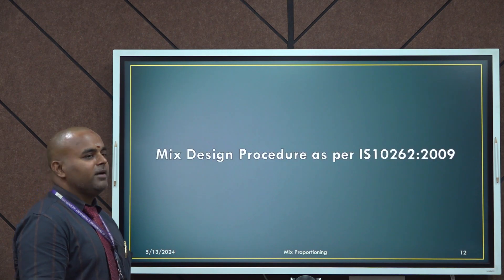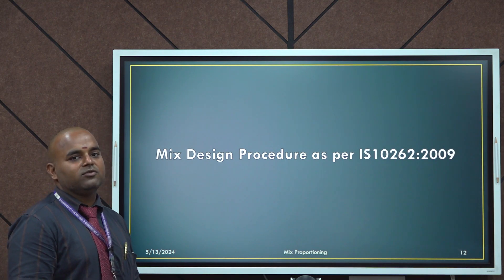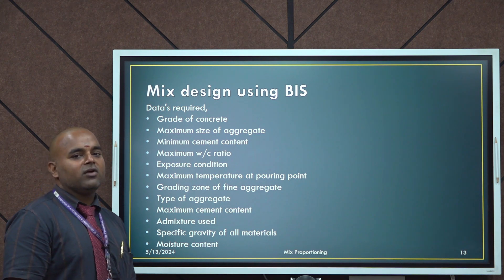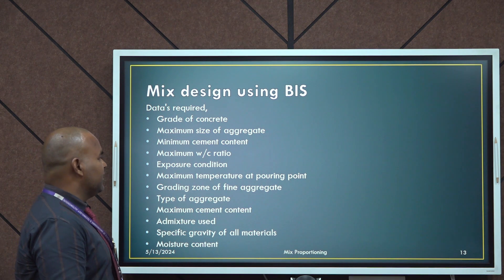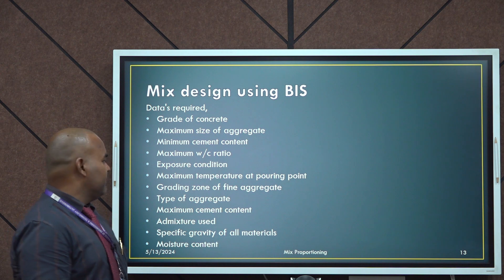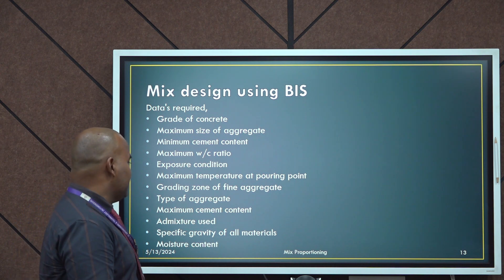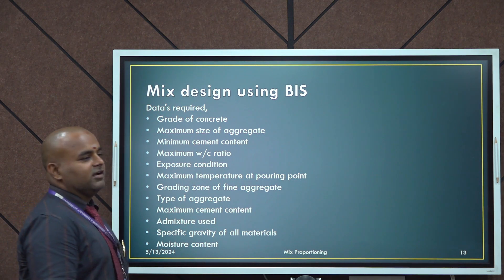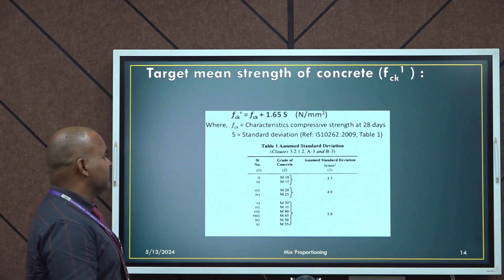Now we are going to see the step-by-step procedure of the BIS mix design procedure of IS 10262-2009. The data required before proceeding to the mix design procedure are: grade of concrete, maximum size of aggregate, minimum cement content, maximum water cement ratio, exposure condition, maximum temperature at pouring point, grading zone of fine aggregate, type of aggregate, maximum cement content, admixture use, specific gravity of all materials required, and the moisture content.